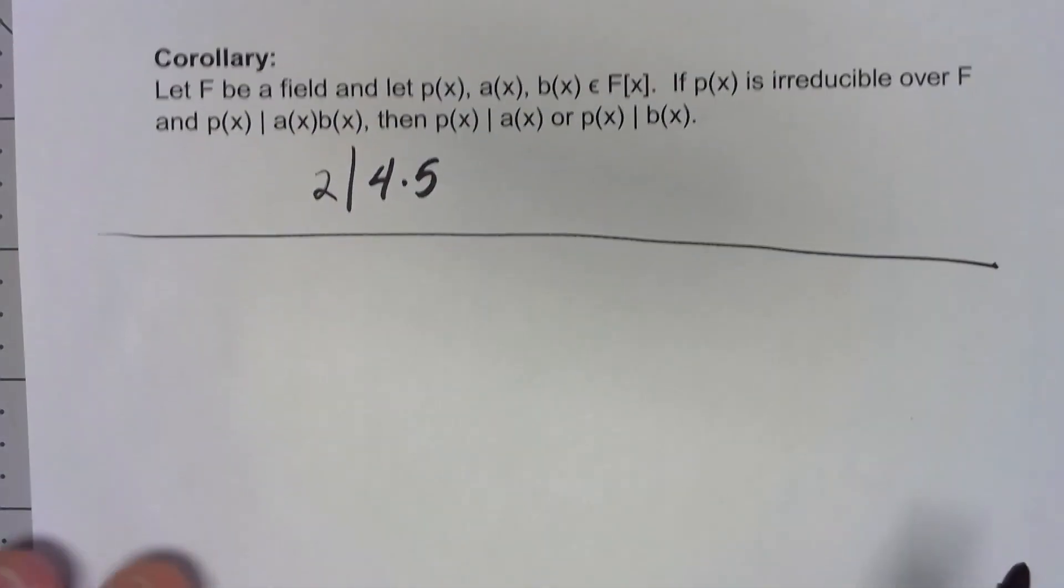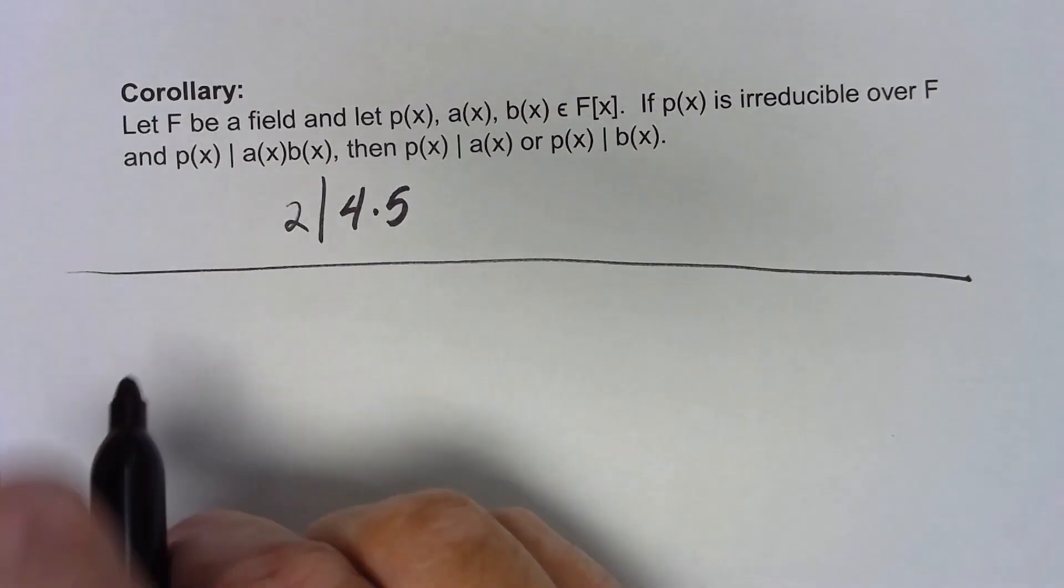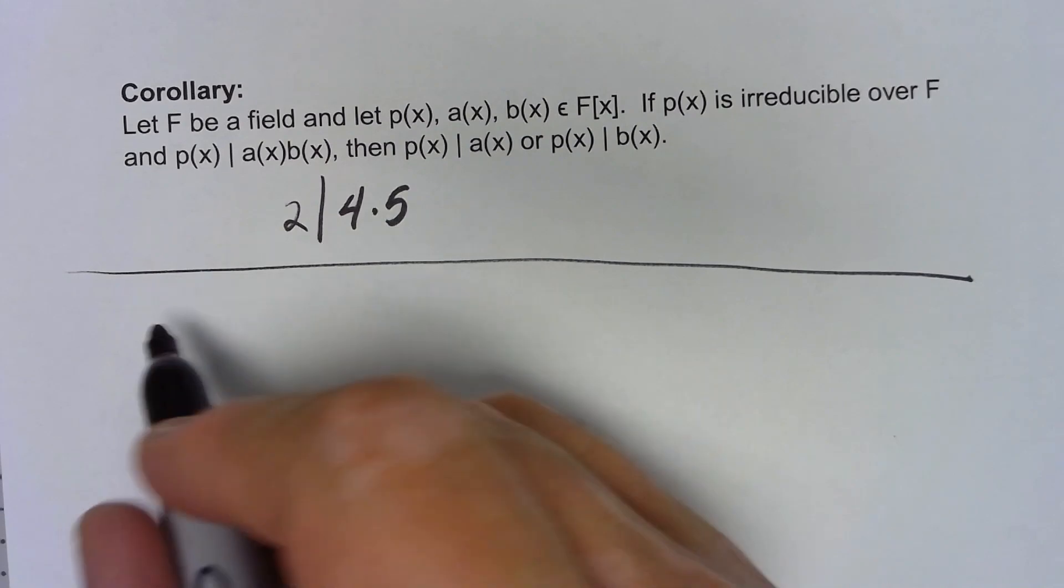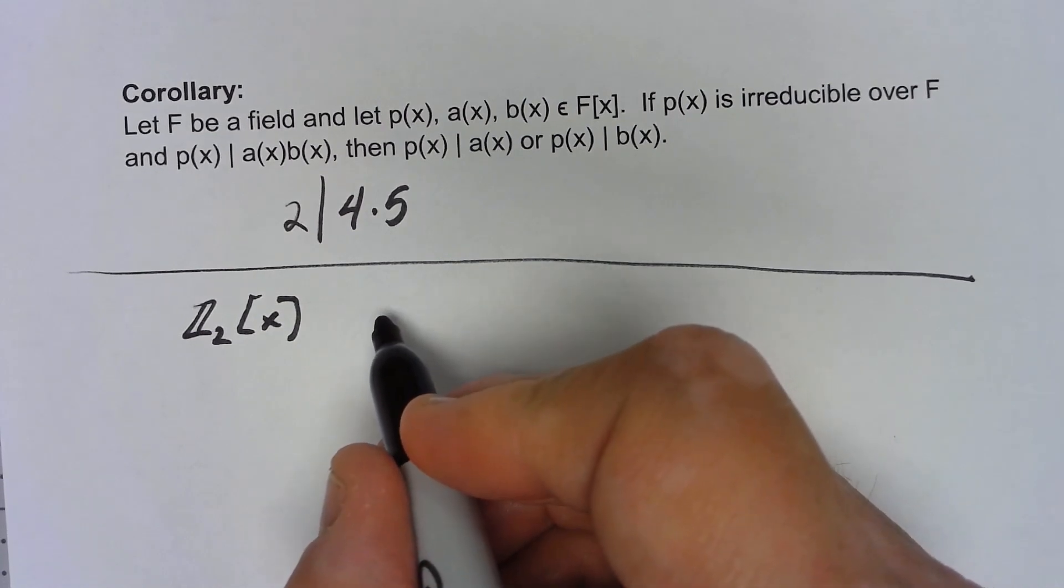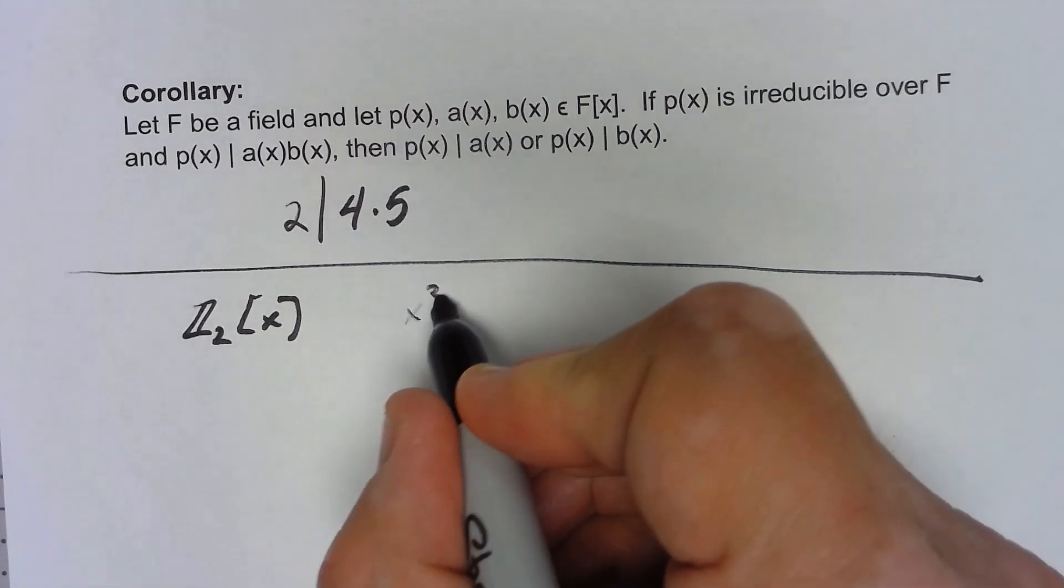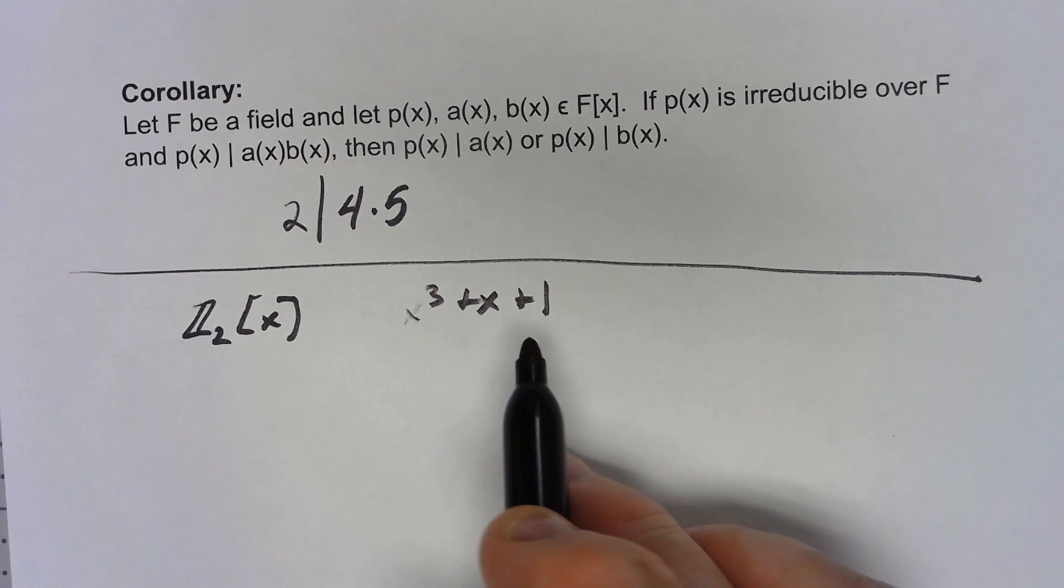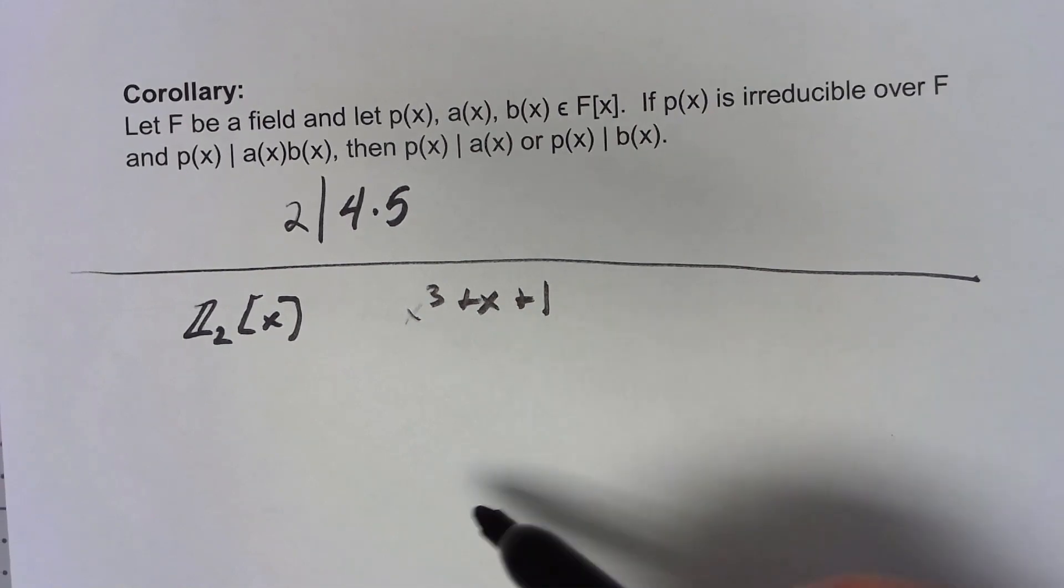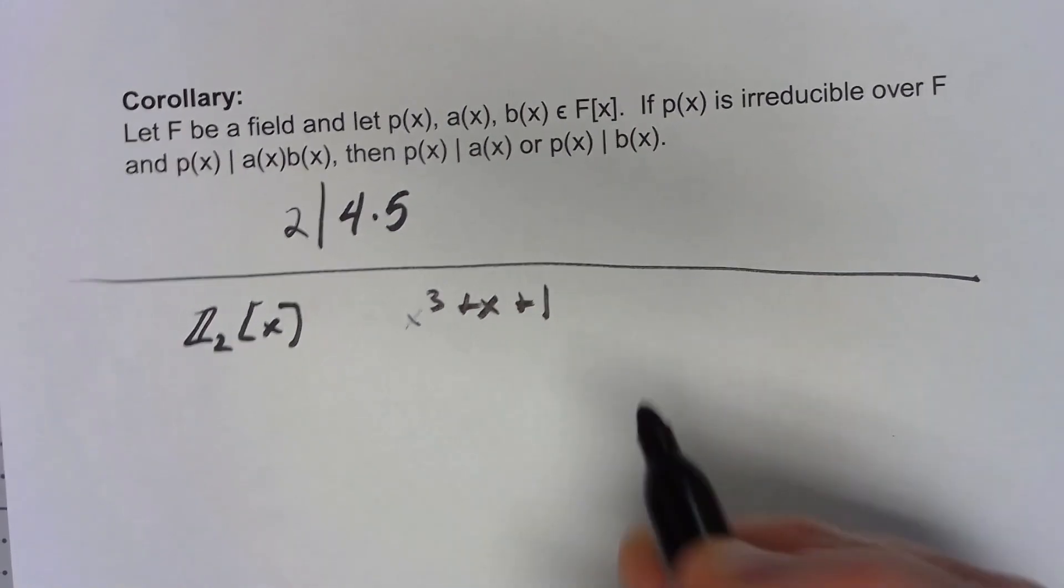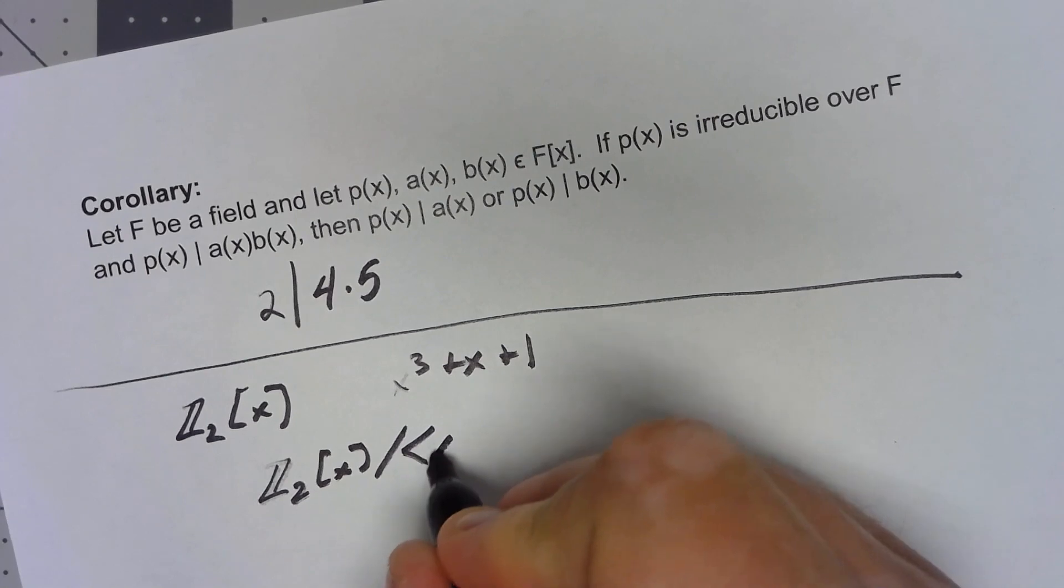Now, let's use some of this stuff very simply here. Let's say we've got Z2[x] and let's look at the polynomial x cubed plus x plus one. That's a cubic polynomial, so that means it's irreducible if it doesn't have a zero and plugging in zero and one, which are the only elements of Z2, neither one of those is zero. So that means that's an irreducible polynomial and that means that Z2[x] mod the ideal generated by x cubed plus x plus one is a field.